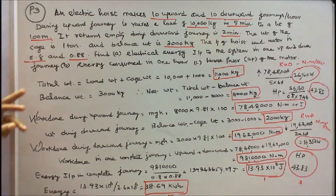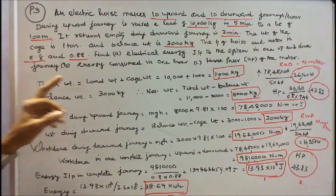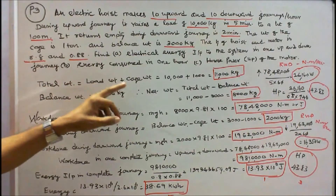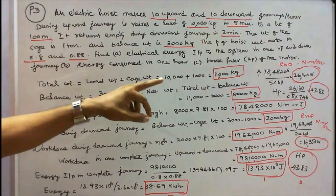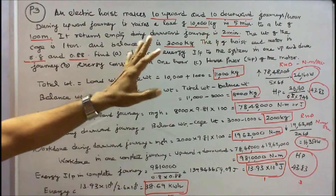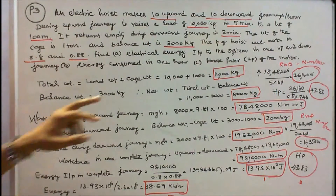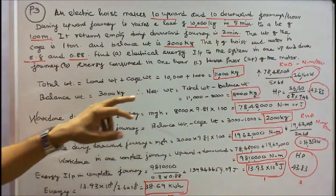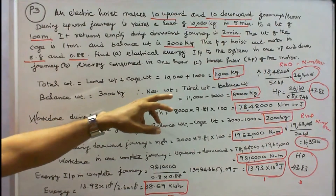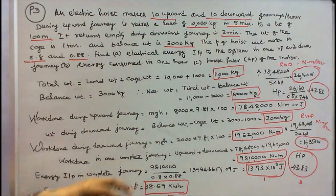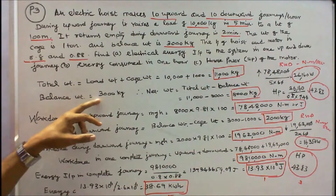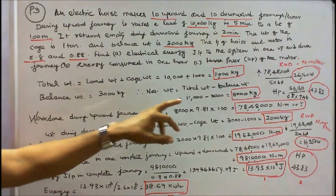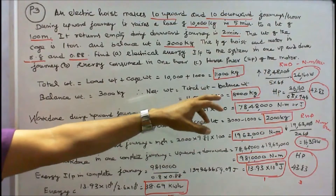First step: total weight is equal to load weight plus cage weight. Load weight is 10,000, cage weight is 1000, that is equal to 11,000 kg. Net weight is equal to total weight minus balance weight: 11,000 minus 3000, that is equal to 8,000 kg.